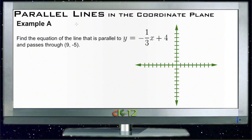Let's take a look at parallel lines in the coordinate plane examples. Example A asks us to find the equation of the line that is parallel to y equals negative one-third x plus four and passes through the point nine, negative five. This looks a little confusing perhaps, but it really is a lot simpler than it appears.